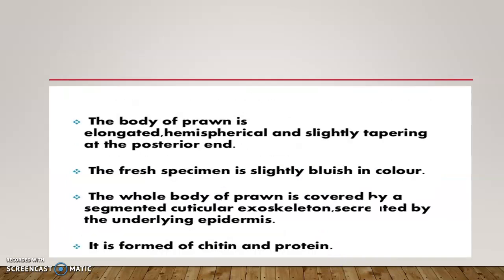The body of the prawn is elongated, hemispherical and slightly tapering to the posterior end. In a fresh specimen of a prawn, it has a whitish-bluish color. The whole body of the prawn is covered by a cuticular exoskeleton which is secreted by the underlying epidermis. It has a segmental cuticular exoskeleton, formed of chitin, which is a polysaccharide and protein, and it is strengthened by sclerotization — that is, hardening of the protein.